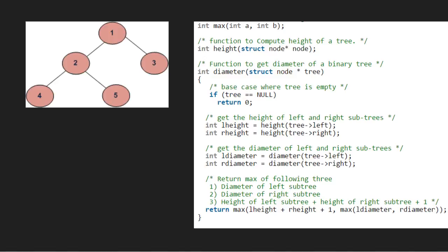We pass the root node which is 1 into the function diameter. We have a tree variable to store this, so tree will point to 1. Since tree is not null, we omit the if statement. Now we get the height of the left and the right subtrees. We assume that the height function is already created and returns left height to variable lheight and right height to variable rheight.